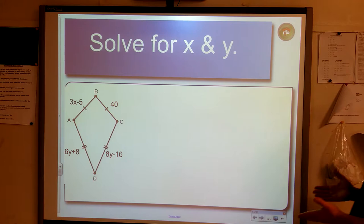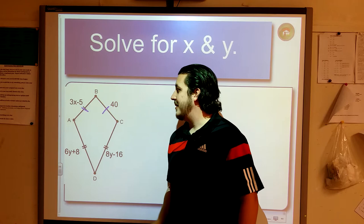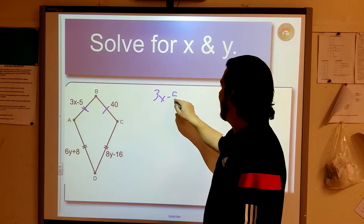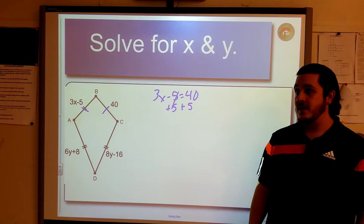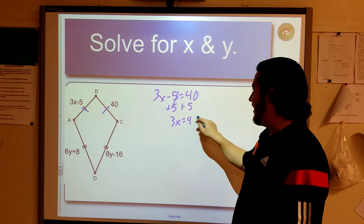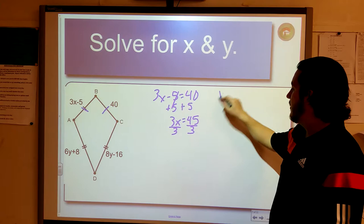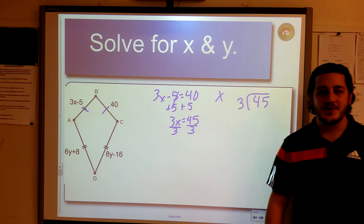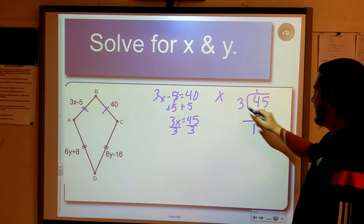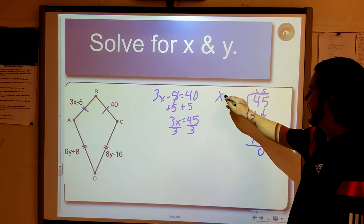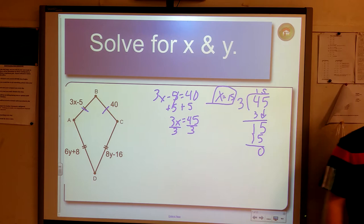So, we're going to solve for X and Y here. Looks crazy, but remember what we said. The consecutive sides are congruent. It's already marked here for us. You know, 3X minus 5 and 40 are going to be equal to each other. So, let's set it equal. 3X minus 5 equals 40. Add 5 to both sides. 3X equals 45. We have to divide by 3. 3 goes into 4 one time. 4 minus 3 is 1. Drops down to 5 here. 3 goes into 15 five times. 5 times 3 is 15. Works out perfectly. X is 15.